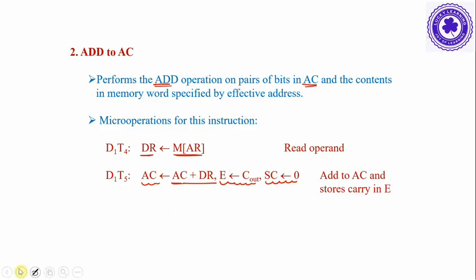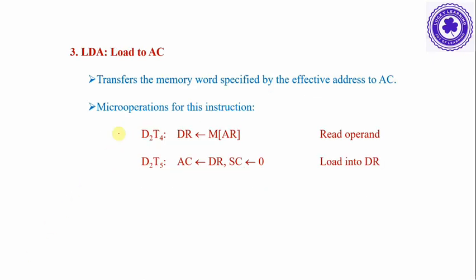Then the sequence counter is set to zero to continue with the next instruction. Load to accumulator transfers the memory word specified by the effective address into the accumulator — the memory word is copied into the data register, then the data register value is stored into the accumulator, then the sequence count is set to zero to continue with the next instruction.